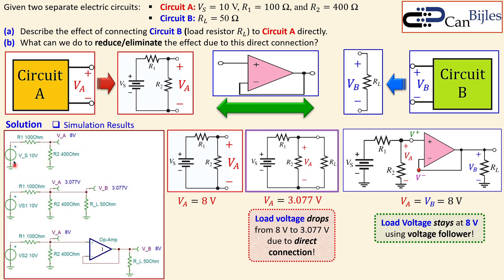These are the simulation results. The first circuit shows only circuit A measuring 8 volts. Connecting RL directly gives 3.077 volts — those two are in parallel. The third circuit uses an ideal operational amplifier with negative feedback as the voltage follower. We can see VA is 8 volts and VB is also 8 volts. This proves that our calculations and simulation results agree.